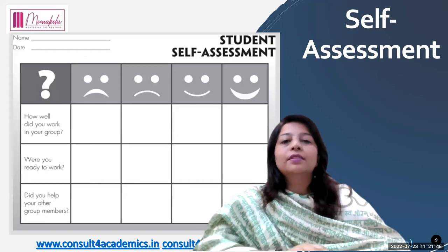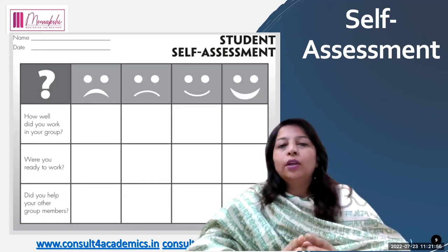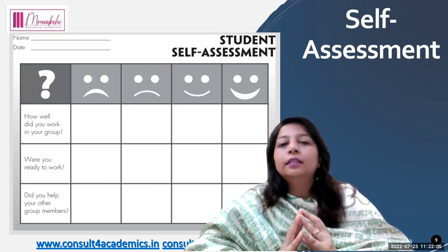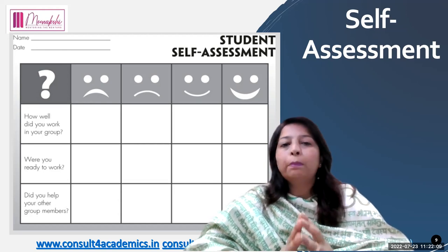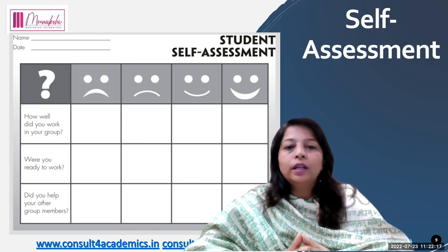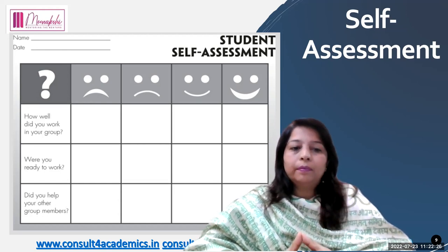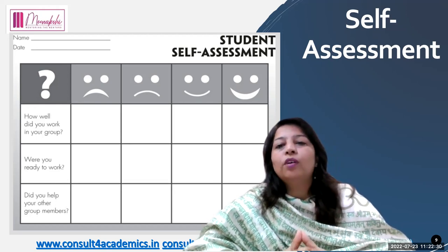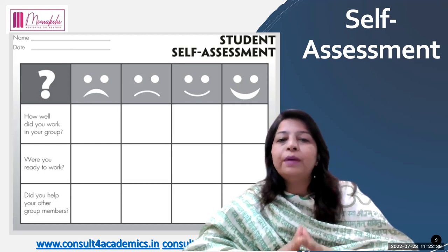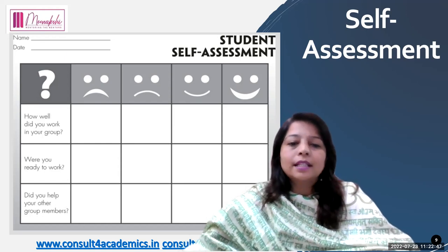Next is student self-assessment — a very important graphic organizer. Make sure you use it at various stages in the class, either as a reflection after the lesson is complete or as part of portfolios. Students should self-assess, there should be peer assessment, parent assessment, and teacher assessment as well. The self-assessment here asks: how well did you work in the group? Were you ready to work? Did you help your other group members? You can tweak it and give it in different formats for student self-assessment.